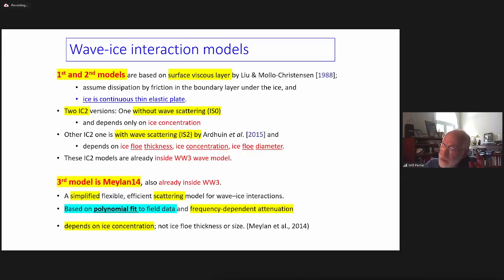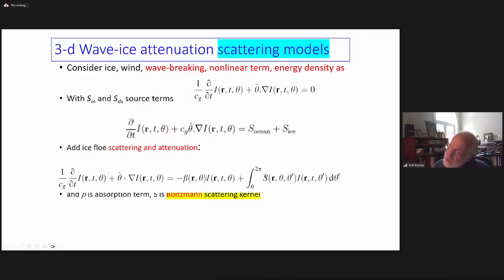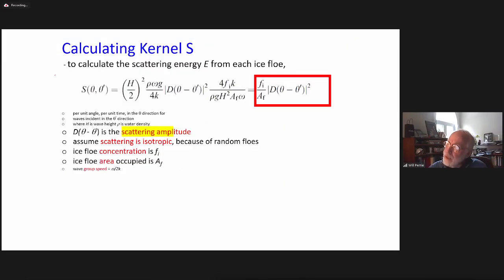The next three models we put into WaveWatch are more complicated — based on scattering theory. If you remember undergraduate physics, scattering of particles on a target involves a Boltzmann integral: incoming wave, outgoing wave, and an integral collecting incoming and outgoing waves against the scattering target. The basis of a wave model is like that — wave scattering on a target (the ice floes) and the outgoing waves. We built this into the WaveWatch model. The important points are the scattering amplitude, the randomness of the floes, and dependency on ice concentration, dimensions, and thickness.